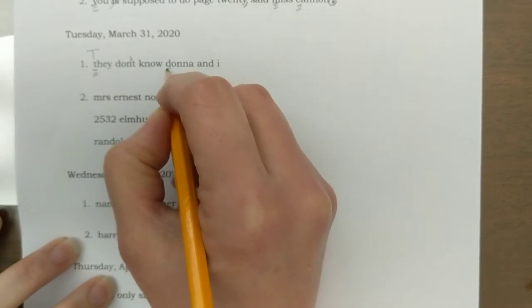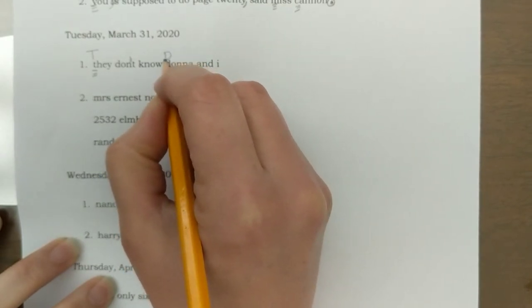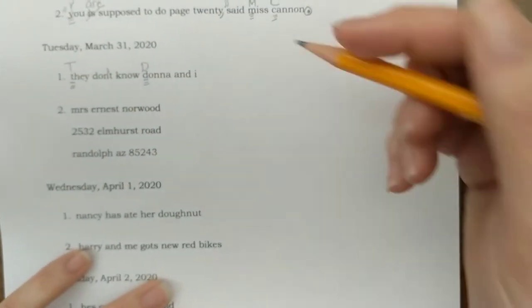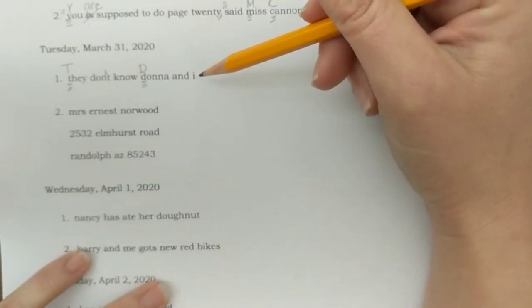Donna needs a capital letter. Good, they put the other person first before you, so that's good. Now let's decide if we need to say I or me.